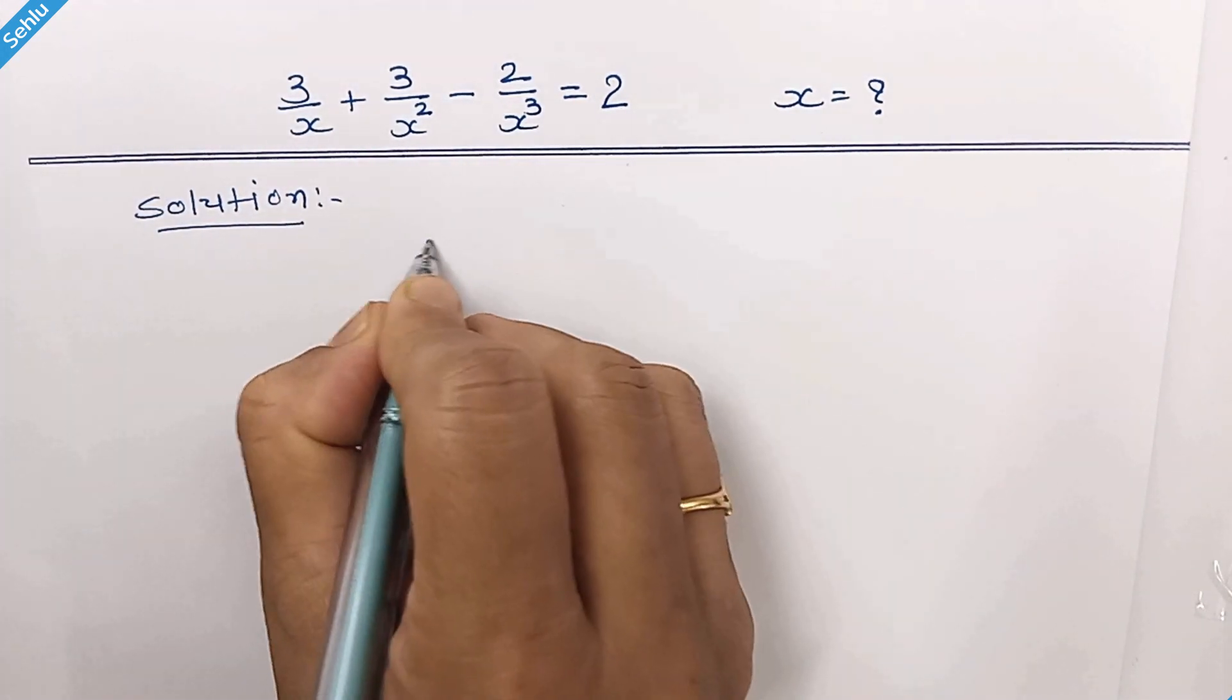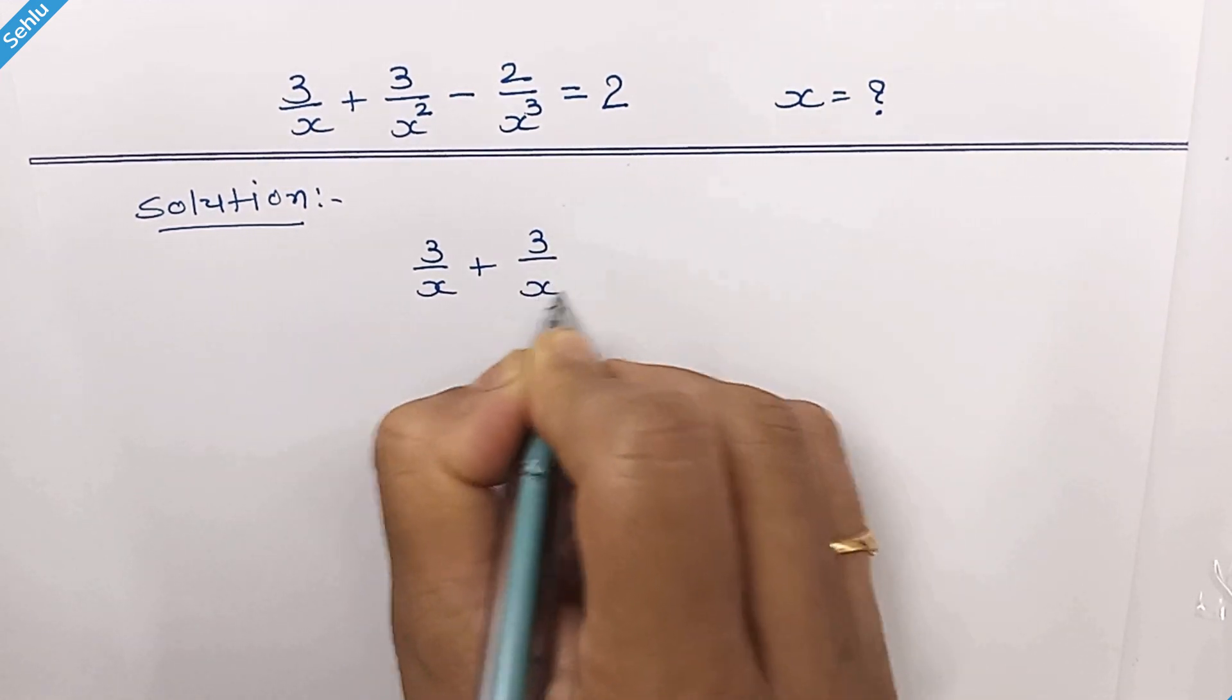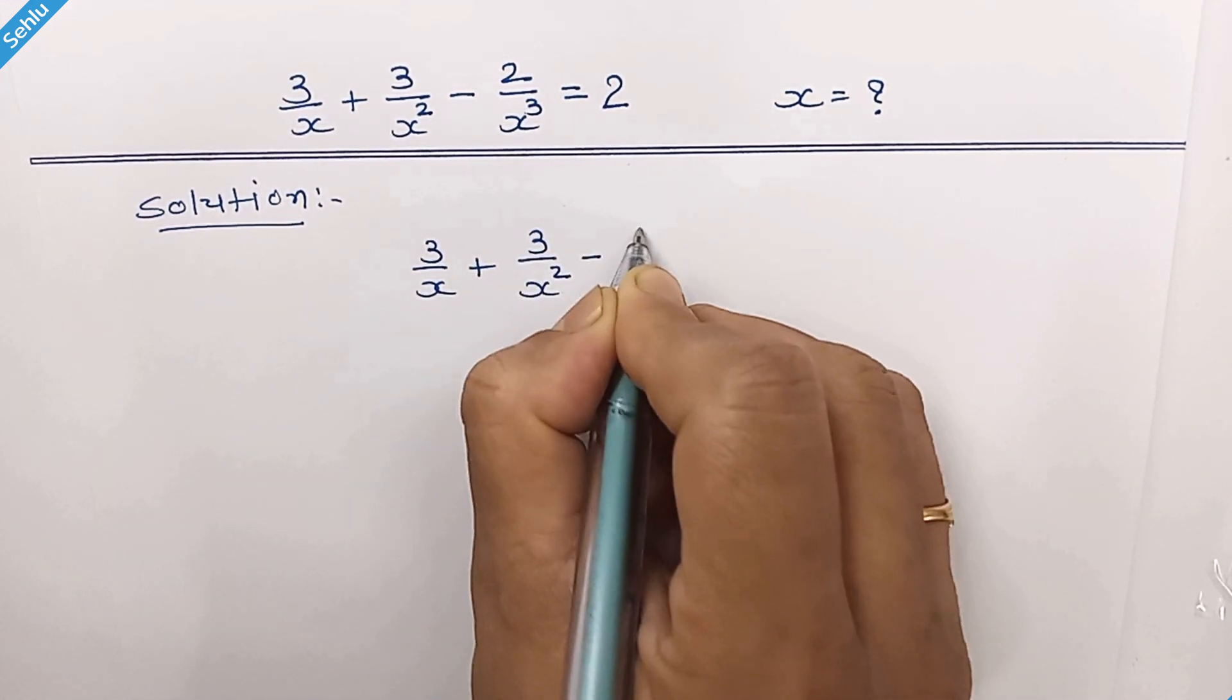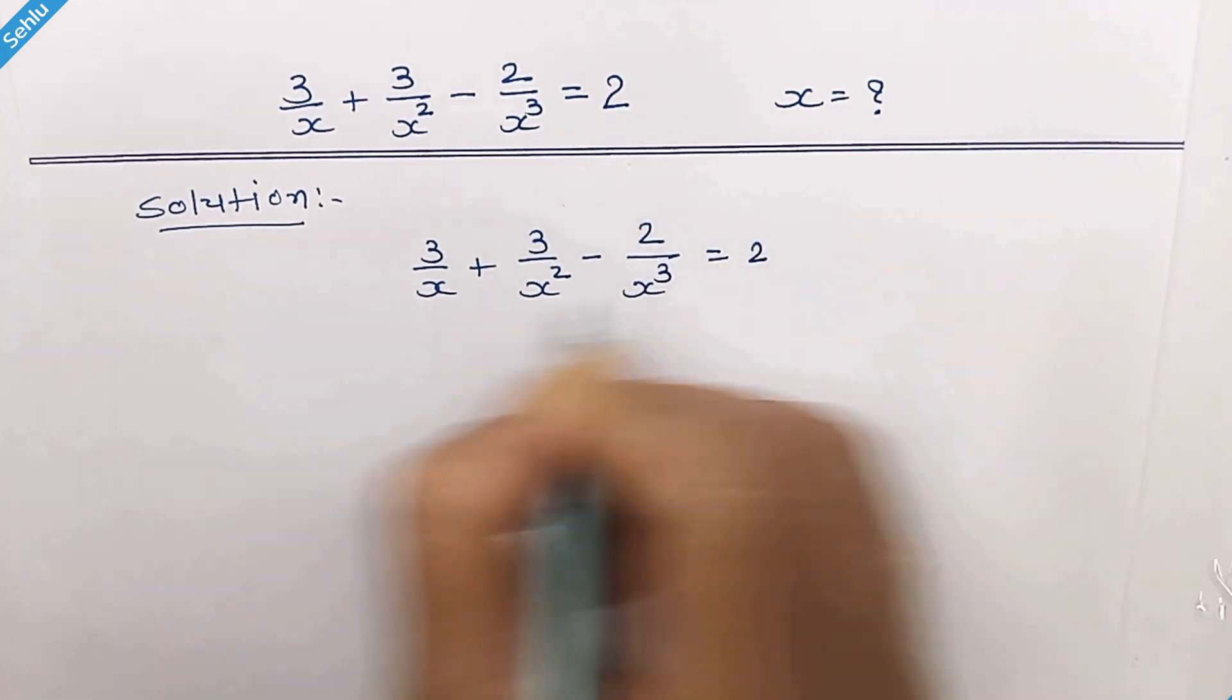Question is 3 over x plus 3 over x square minus 2 over x cube is equal to 2.